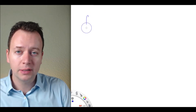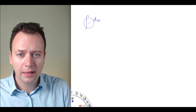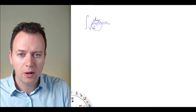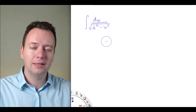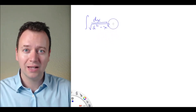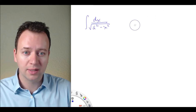Next we're going to look at some specific examples in which we're going to use trigonometric substitution to solve an integral. The first example is the integral of dx over the square root of a squared minus x squared. This integral involves a square root of a squared minus x squared, so the first thing we're going to think of is trigonometric substitution.